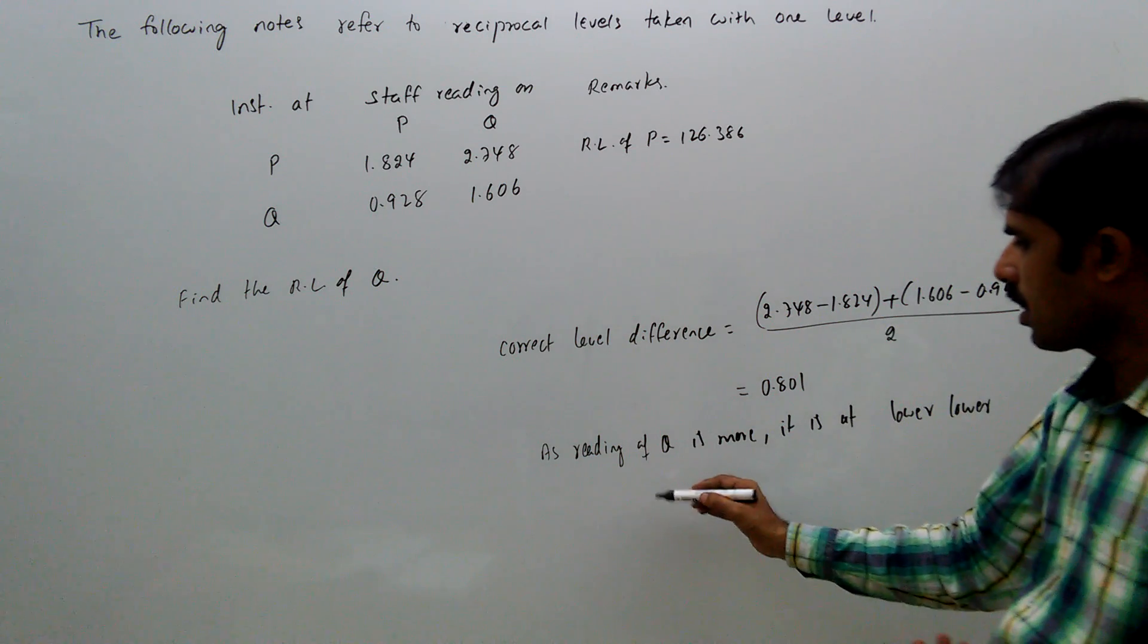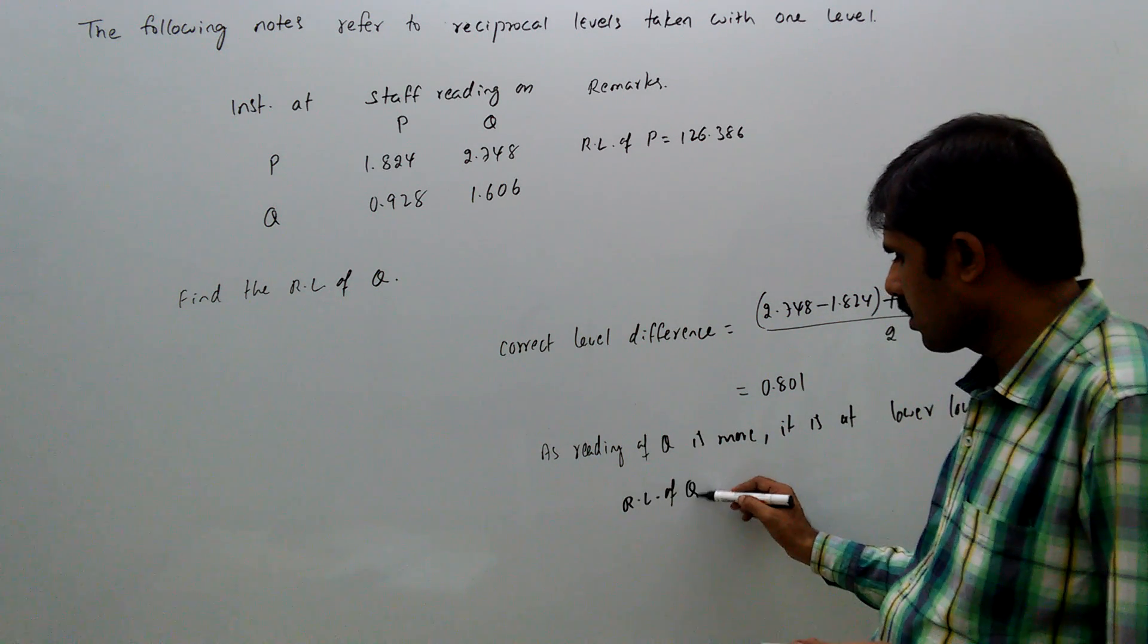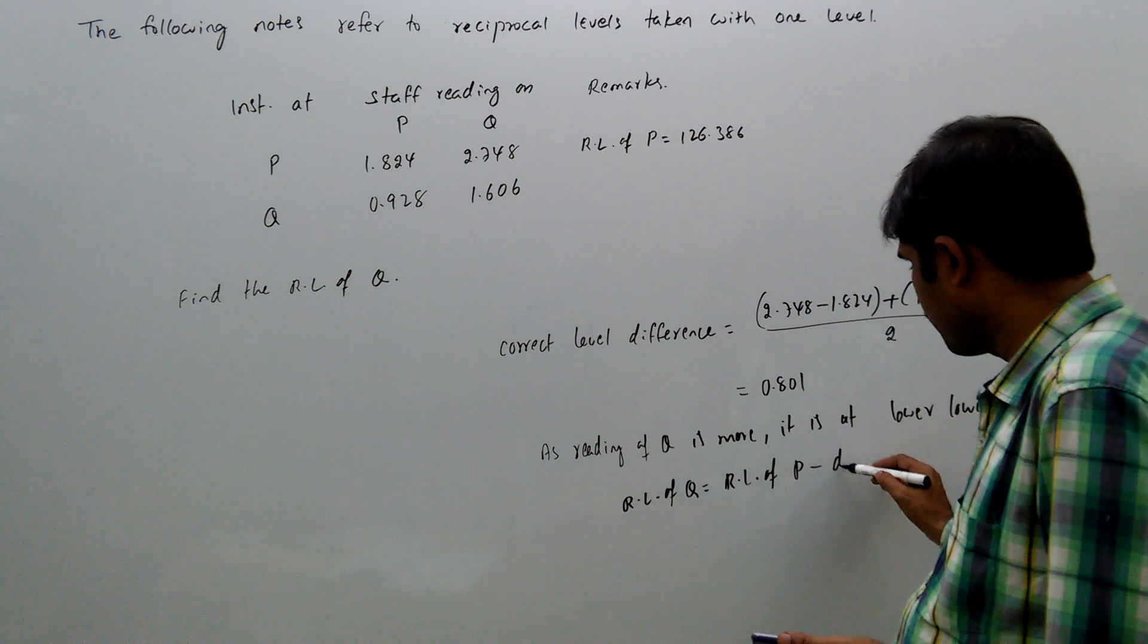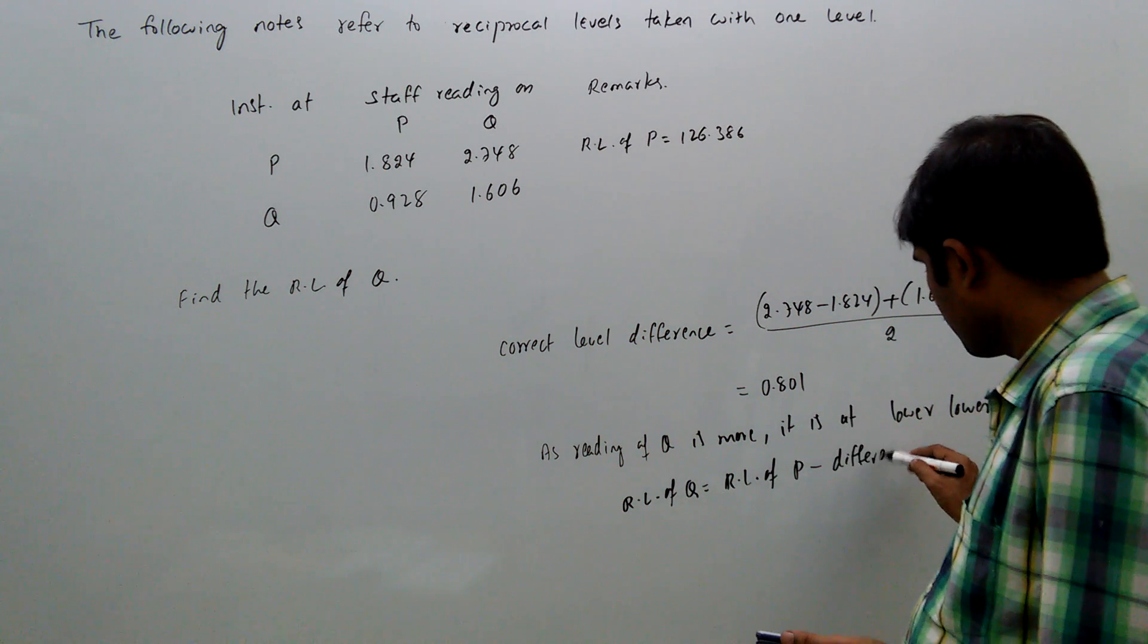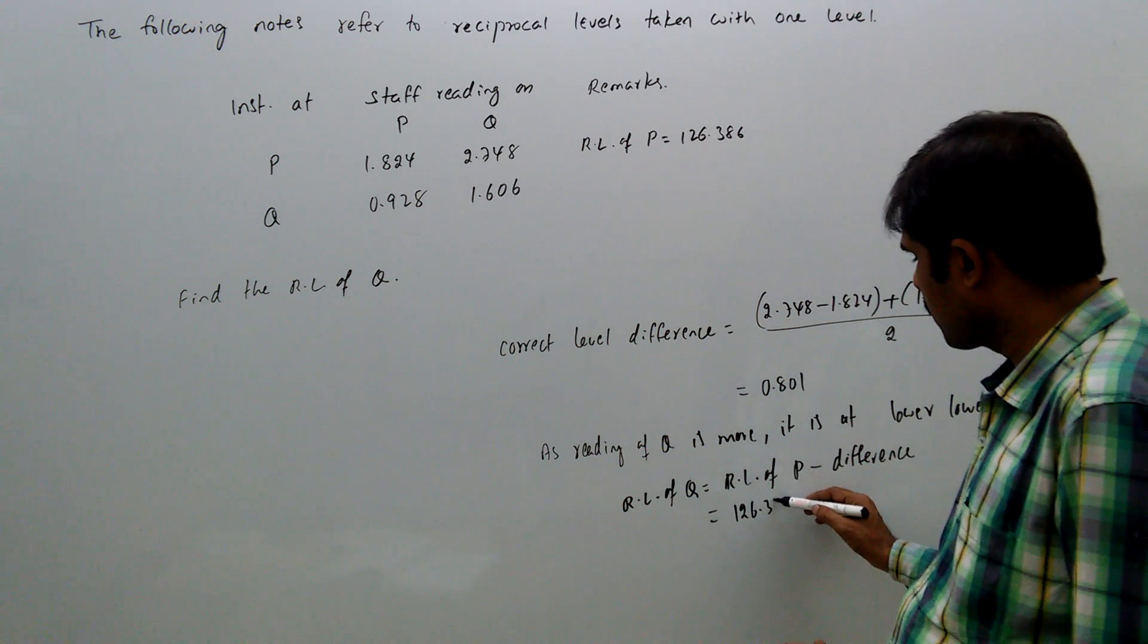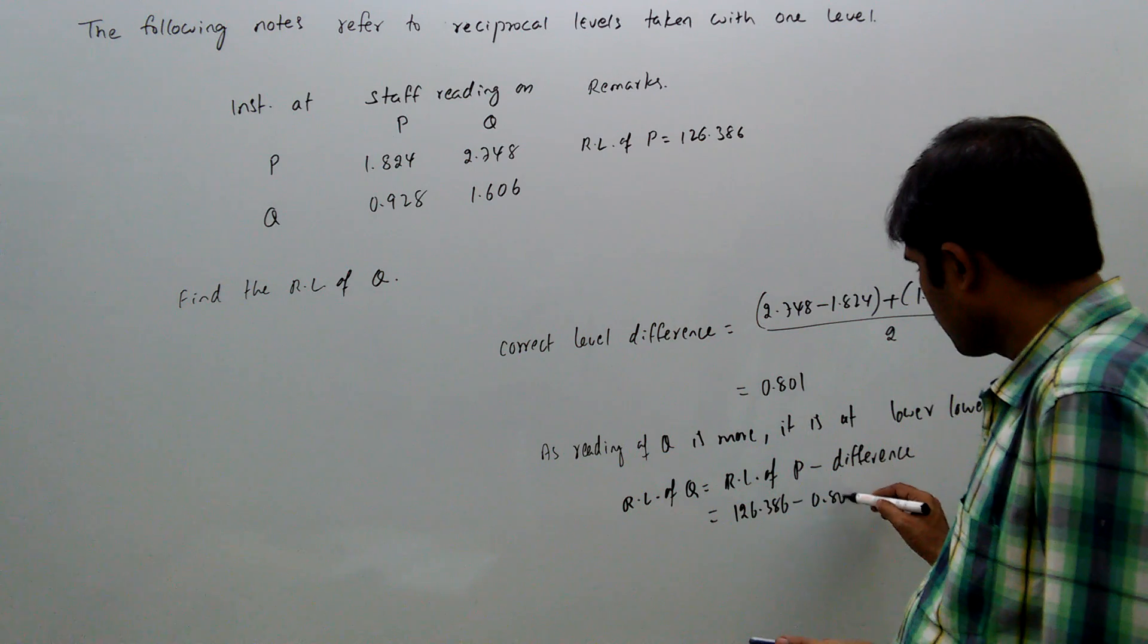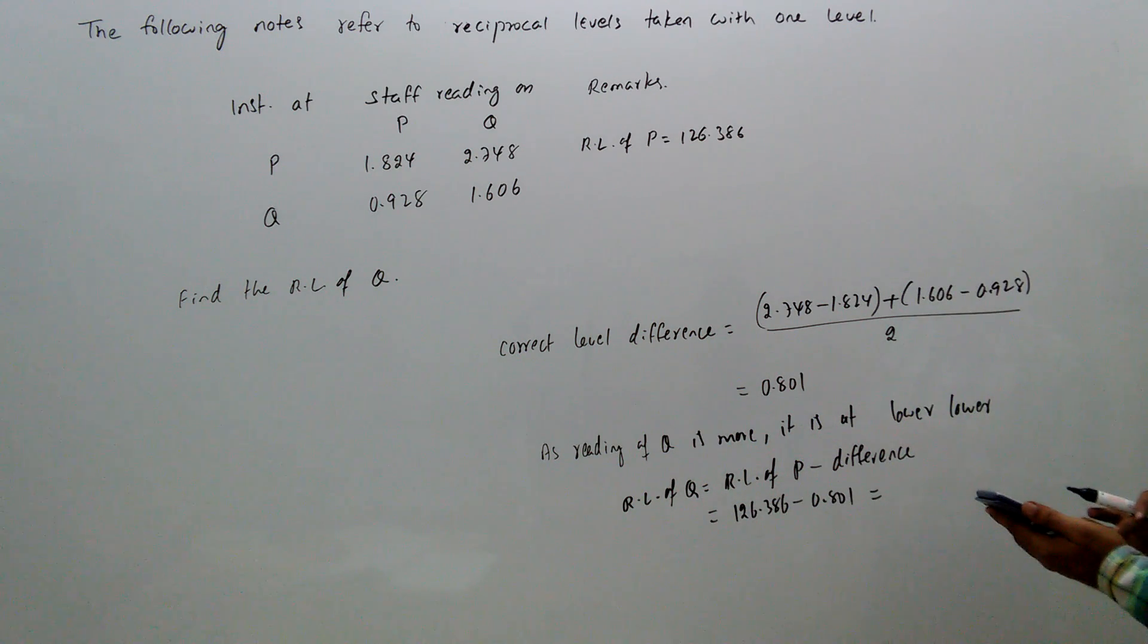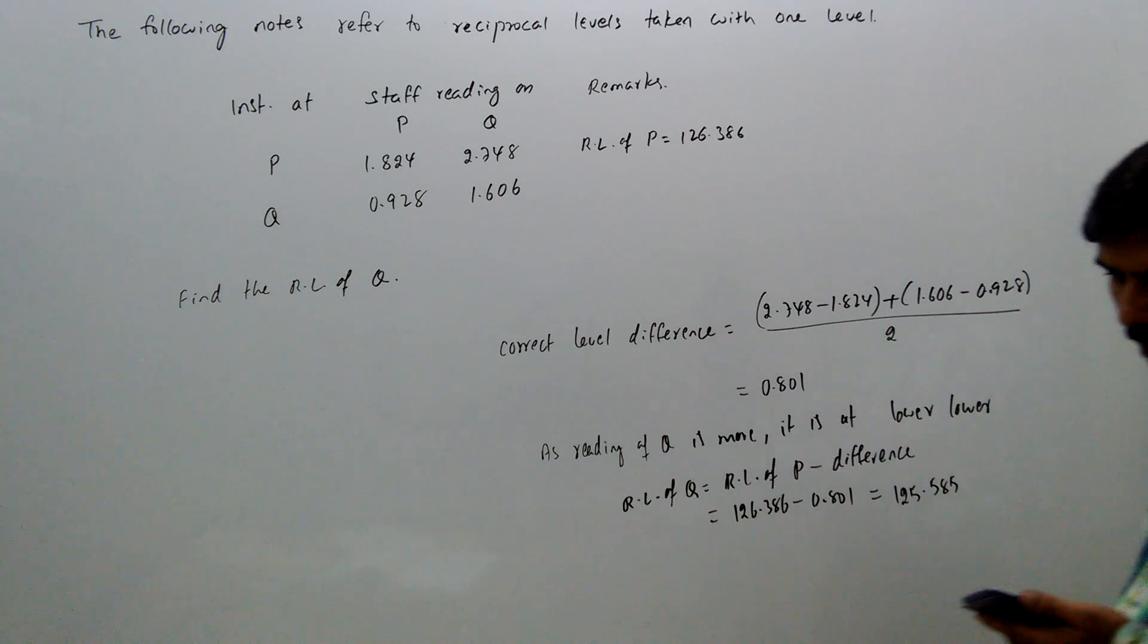Therefore R of Q equals R of P minus difference. That equals 126.386 minus 0.801, which gives us 125.585.